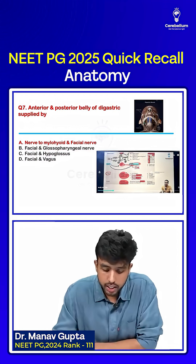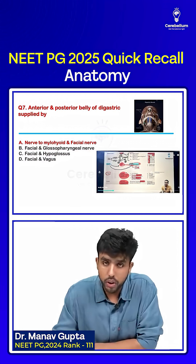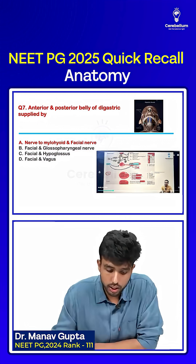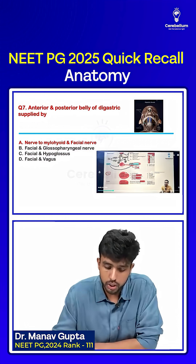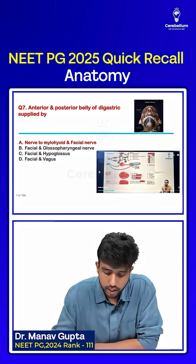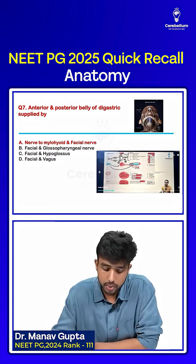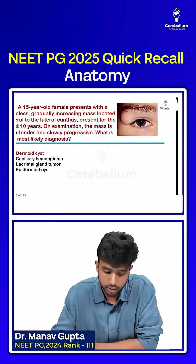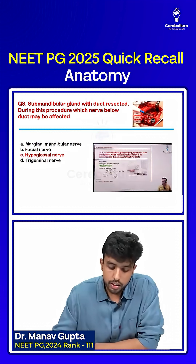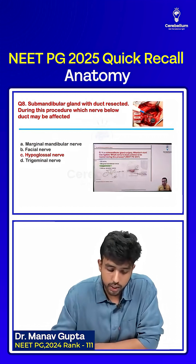The next question: the anterior and posterior belly of digastric are supplied by — options are nerve to mylohyoid, facial and glossopharyngeal nerve, facial and hypoglossus nerve, or facial and vagus nerve. The correct answer is nerve to mylohyoid and facial nerve.